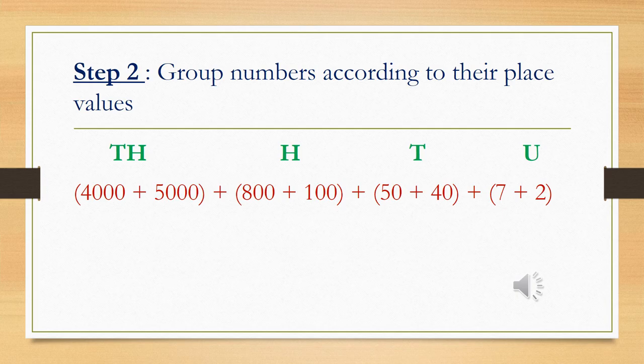Now that I have broken up the numbers into their place values, I can now move on to step 2, which is grouping the numbers according to those place values. In other words, boys and girls, I am going to take all thousands and place them into one bracket. Take all the hundreds and place them into the next bracket. Take the tens and put them into the next bracket and take the units and place them into the next bracket as well. So, we have under thousands, 4000 plus 5000 plus the next bracket, the hundreds, 800 plus 100 plus the next bracket which is my tens, 50 plus 40 plus my unit which is 7 plus 2.